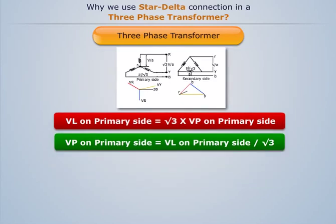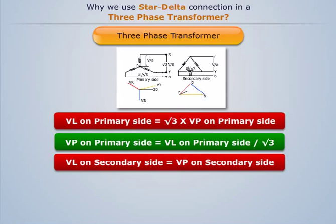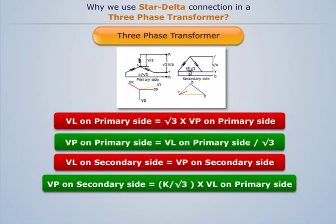And the secondary is delta connected. Line voltage on the secondary side is equal to phase voltage on the secondary side. Secondary phase voltage equals K divided by root 3 times line voltage on the primary side.